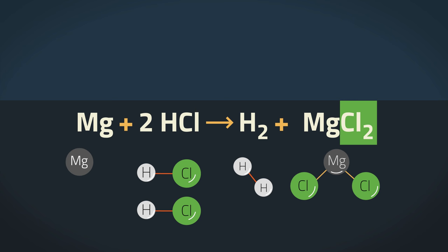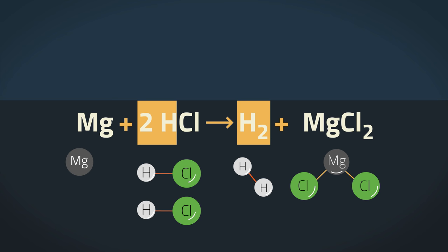As there are two chlorine atoms on the product side, there must also be two chlorine atoms on the reactant side. You can also see that the number of hydrogen atoms is also balanced because there are two hydrogens in the hydrochloric acid on the reactant side and there are two hydrogens on the product side.